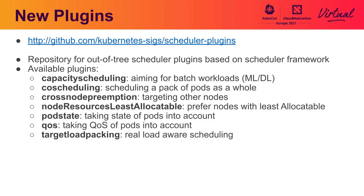There's also the scheduler plugins repository. In case the default in-tree plugins are not enough, you can bake in additional plugins provided by the scheduler plugins repository — a home to out-of-tree plugins, some of which you might find useful. Currently there are seven plugins, for example co-scheduling, which adds the capability of gang scheduling. And if you have a new plugin you want to share with the community, the scheduler plugins repository is a good place to start.